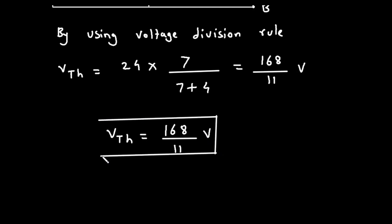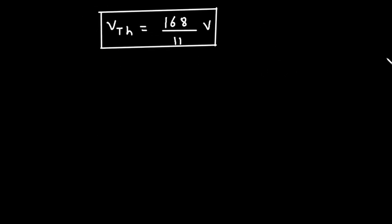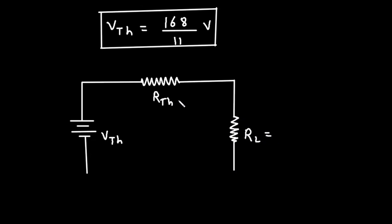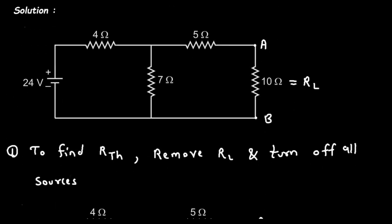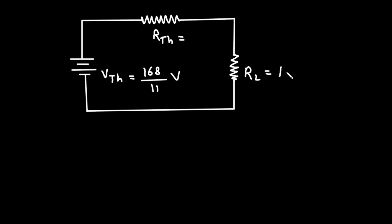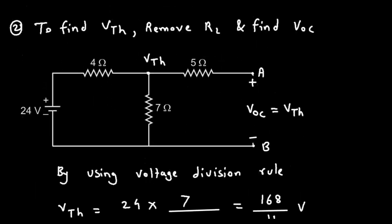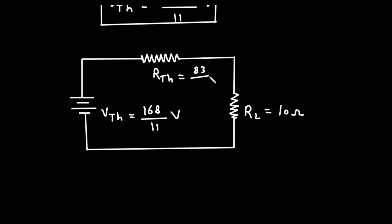Now we got the value of VTH, so we can draw the Thevenin equivalent circuit. It will have VTH equal to 168/11 volt, RTH equal to 83/11 ohm, and RL equal to 10 ohm.